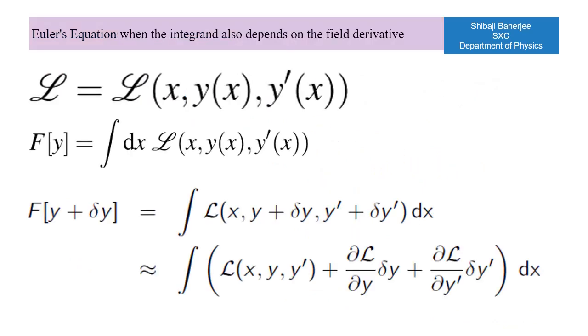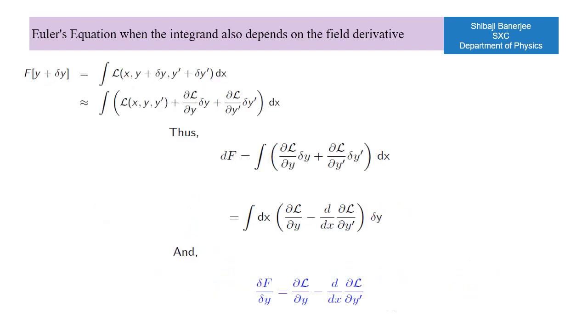This is the most important case. In the last line we write an approximate sign since Taylor series expansions have been used. The third term is new and it can be simplified by expanding through partial integration.